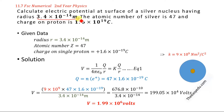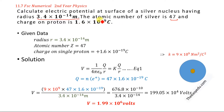The atomic number of silver is given as 47. The atomic number is also known as the number of protons inside the nucleus of the atom, so the number of protons here is given as 47. The charge on a proton is given as 1.6 × 10⁻¹⁹ coulombs.